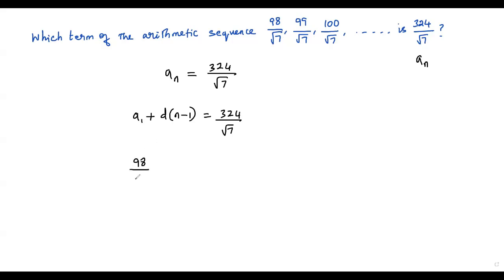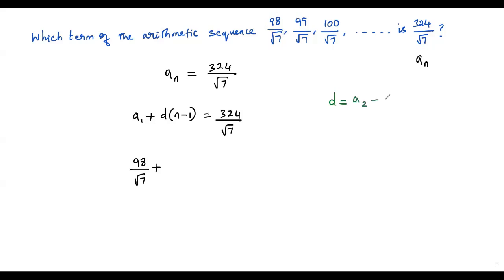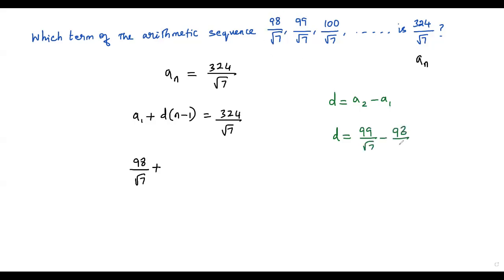We plug in 98/√7 for a1. For d, the common difference, we subtract the first term from the second term: d = a2 − a1 = 99/√7 − 98/√7. Since they share the common denominator √7, we get 99 − 98 = 1, so d = 1/√7.